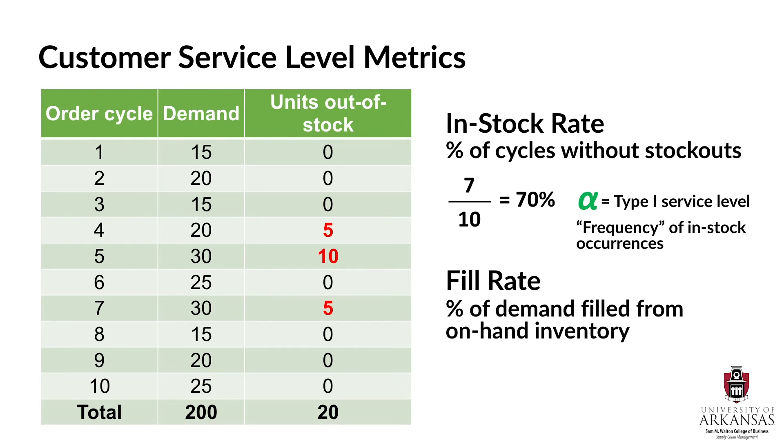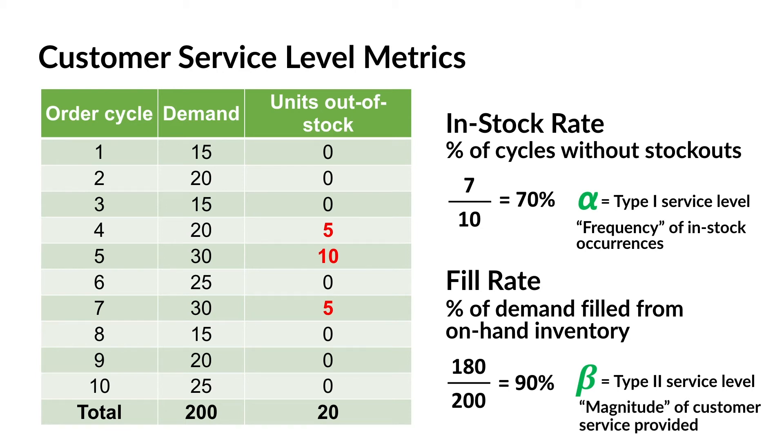The fill rate is the proportion of demand filled from on-hand inventory. This means that total demand is in the denominator and sales from on-hand inventory are in the numerator. In this case, total sales amounted to 180 units. That is, 200 units demanded minus total stock out quantity of 20. This gives us a fill rate of 90%. The fill rate is often called beta or the type 2 service level and is an indicator of the magnitude of the customer service we provide in terms of our ability to fill demand from on-hand inventory.